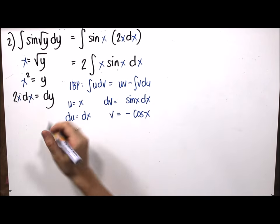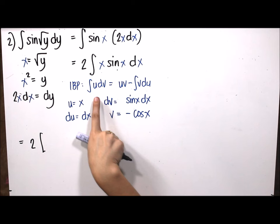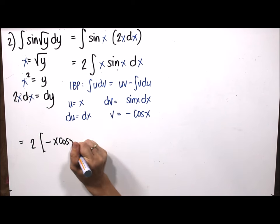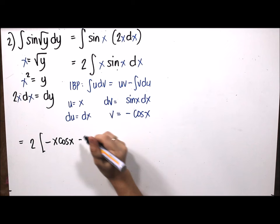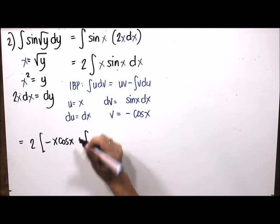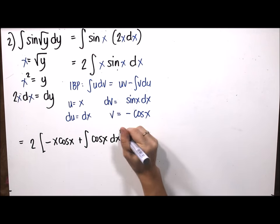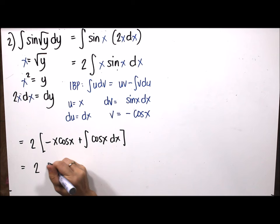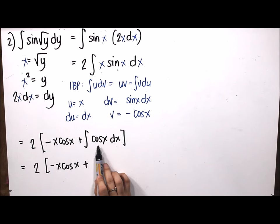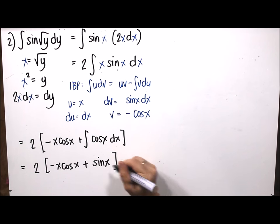Applying the integration by parts formula, we have 2 times the result of u times v, which is negative x cosine(x), minus the integral of v du, where v is negative cosine(x) and du is dx. The double negative gives plus the integral of cosine(x) dx, which is sine(x), plus C.